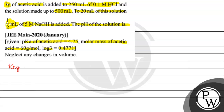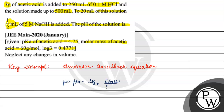The key concept for this question is the Henderson-Hasselbalch equation. pH equals pKa plus log base 10 of concentration of the salt divided by concentration of the acid. It comes into use when we have a strong base and a weak acid. If some moles of base have neutralized the acid, we use the Henderson-Hasselbalch equation to find pH.